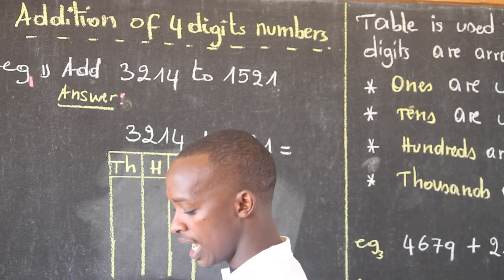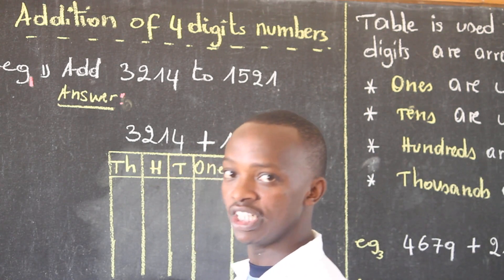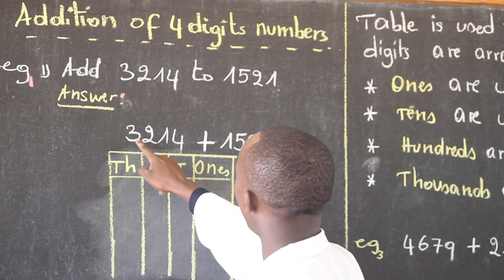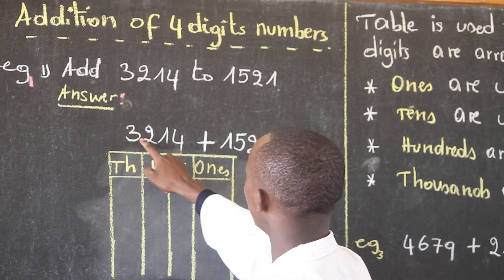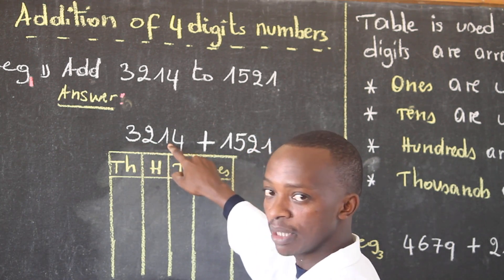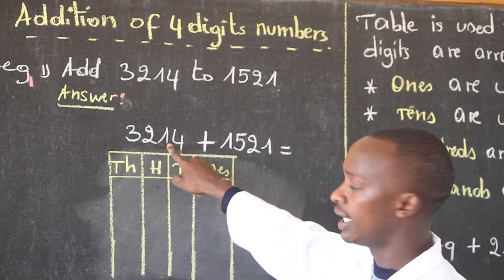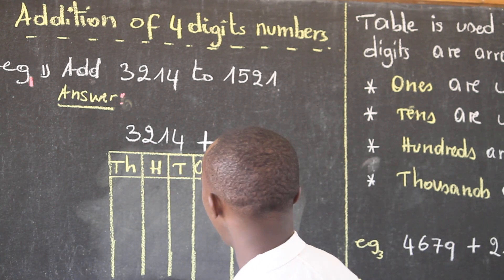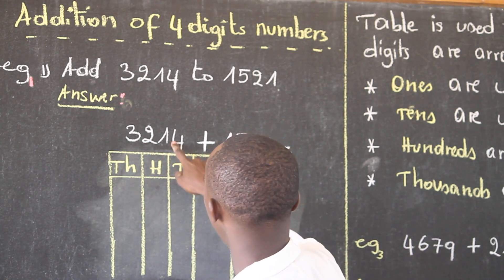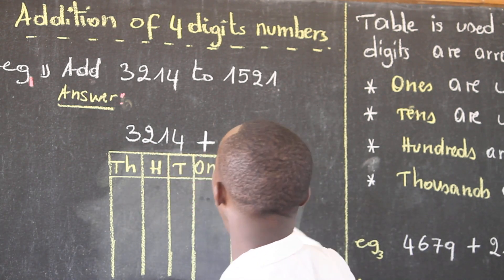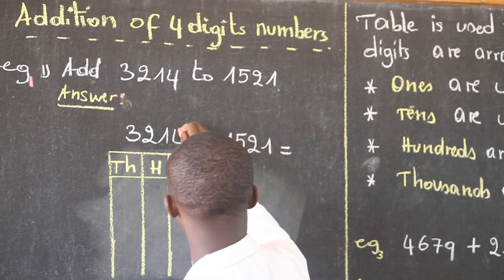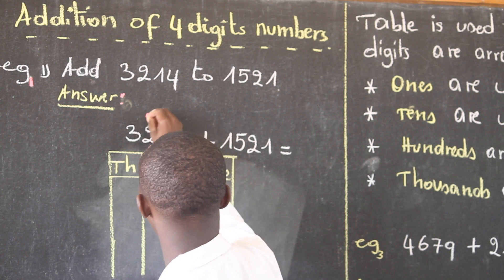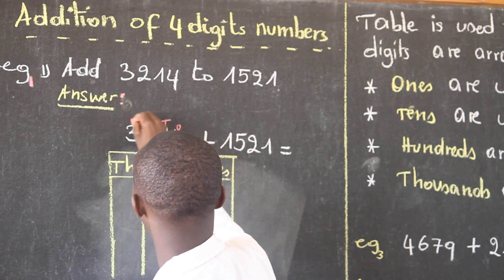Friends of mine, I want your attention here on the chalkboard. We have 3214. I'm going to start with this number. I first need to write this number within my table, attributing letters so that I write it in the table correctly.